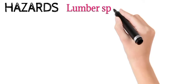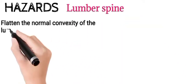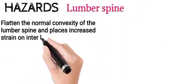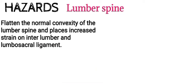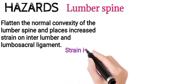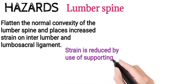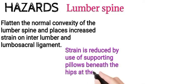Lumbar spine: The position flattens the normal convexity of the lumbar spine and places increased strain on interlumbar and lumbosacral ligaments. Strain is reduced by use of supporting pillows beneath the hips at the sides.